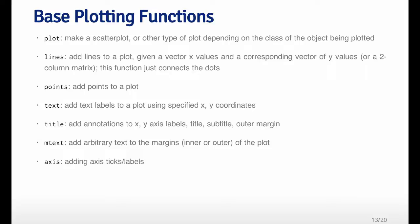Text adds labels, so you want to annotate the plot with text labels. Text can be used to add labels within the plot, and the title function is typically used to add annotations outside the plot, like X and Y axis labels, titles, subtitles, and things like that.